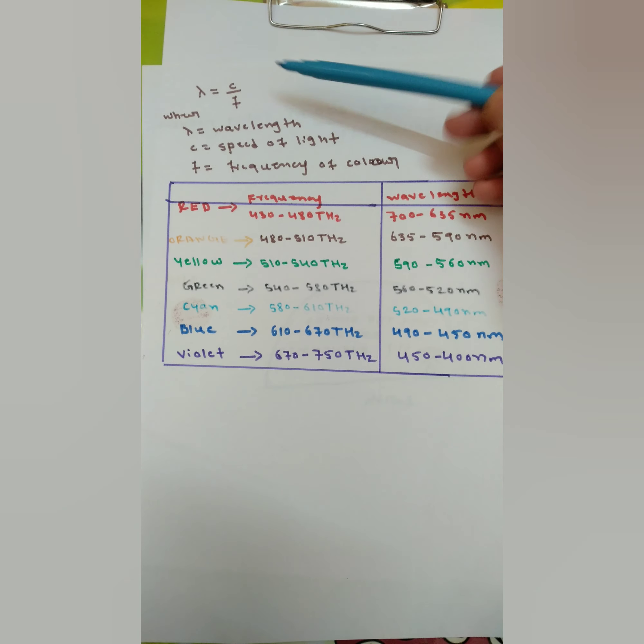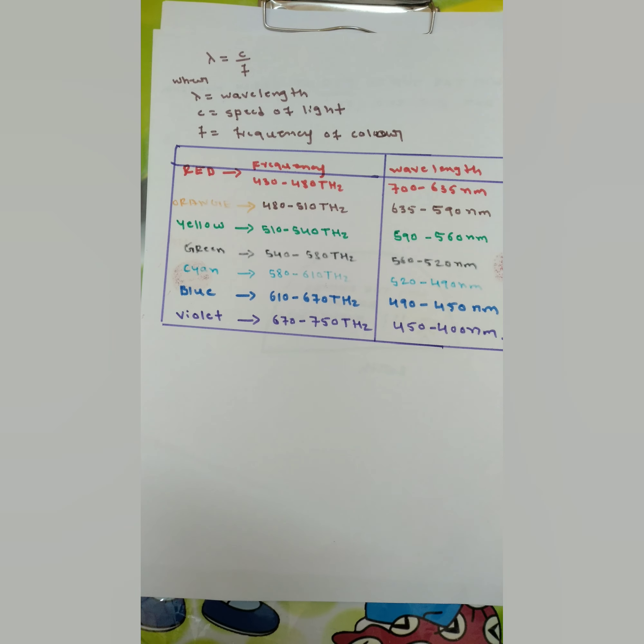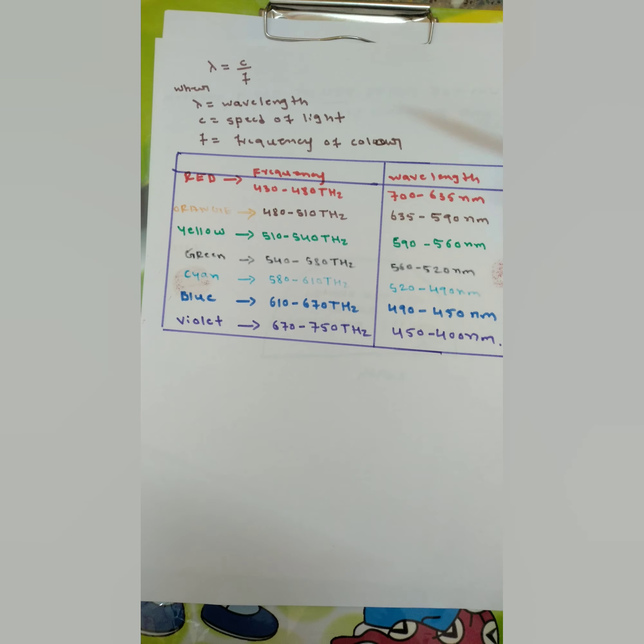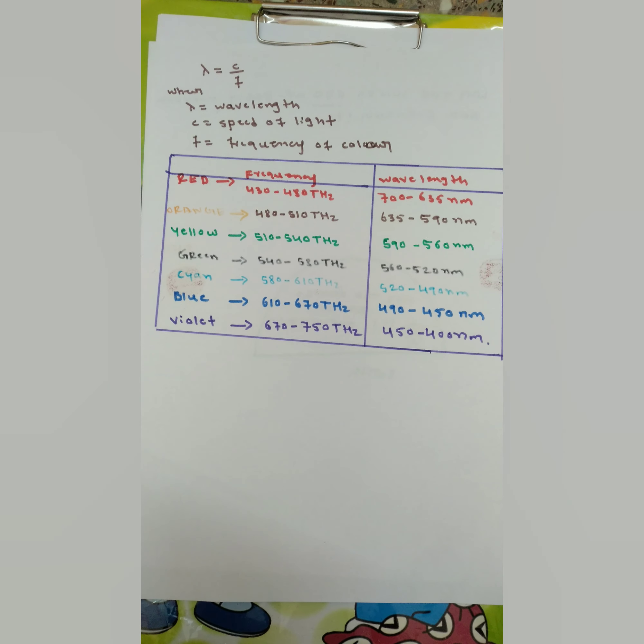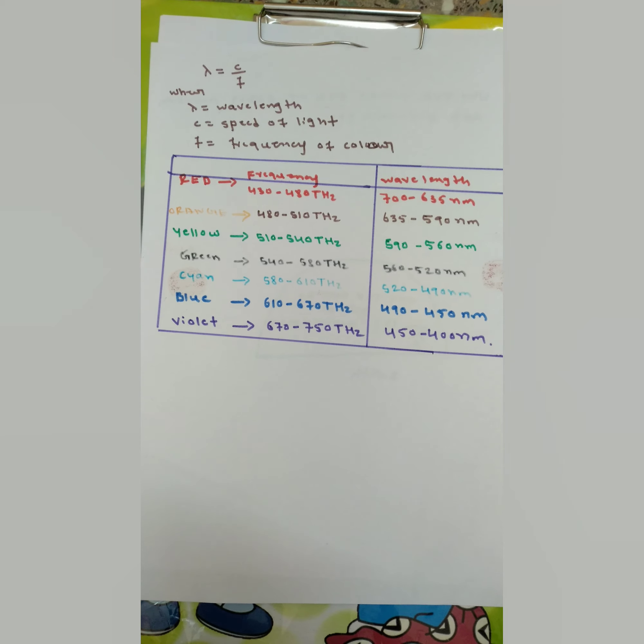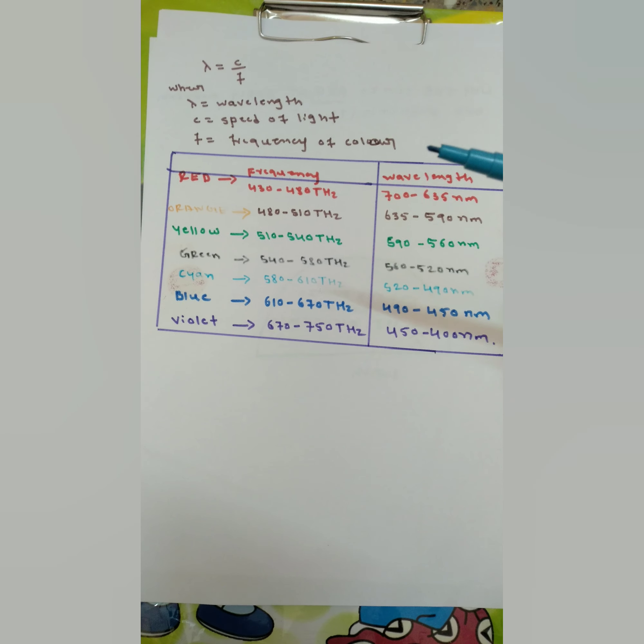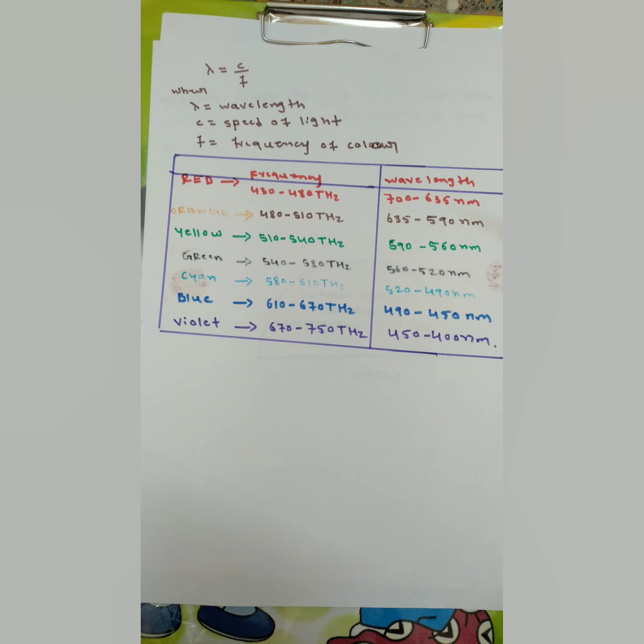Most of us will be using this formula: lambda equals c by f, that is wavelength equals speed of light divided by frequency. Lambda is wavelength, c is speed of light, and f is the frequency of color.